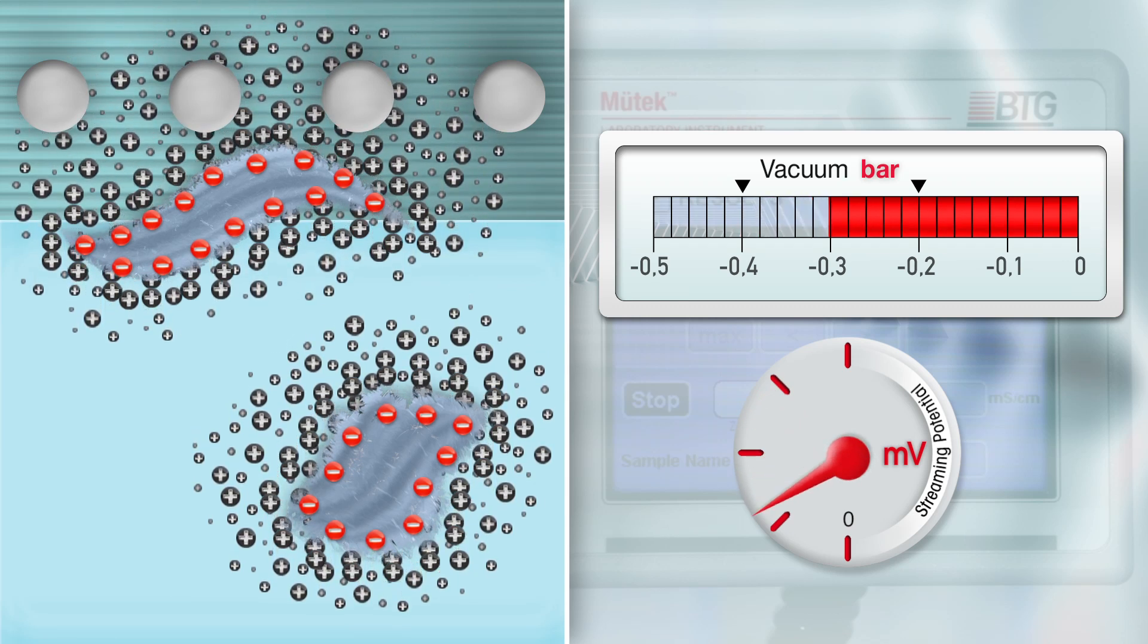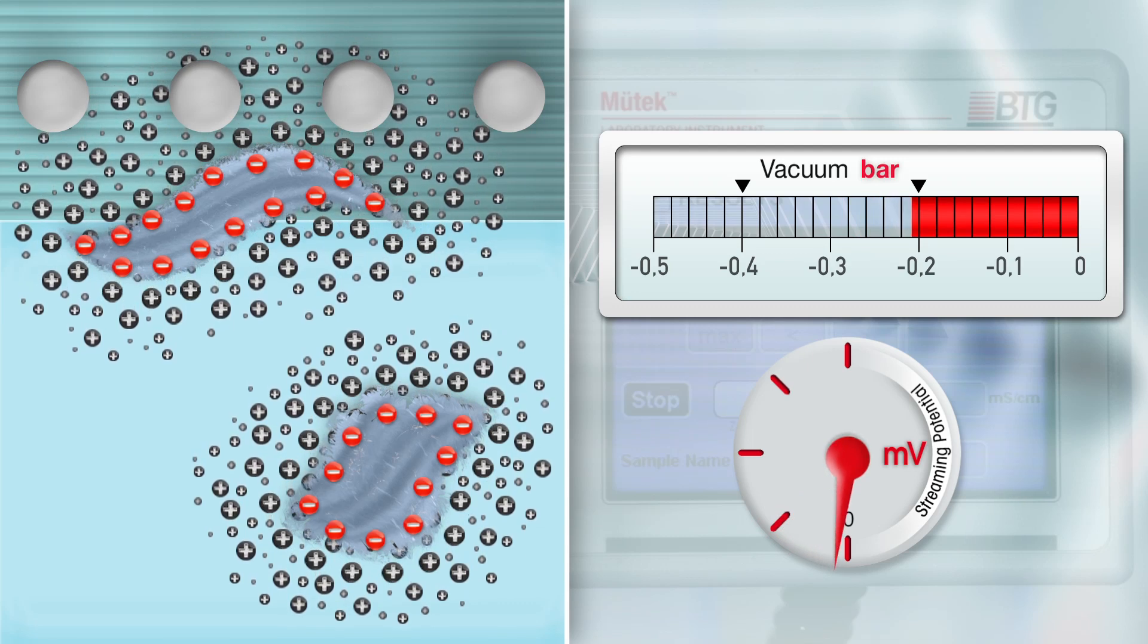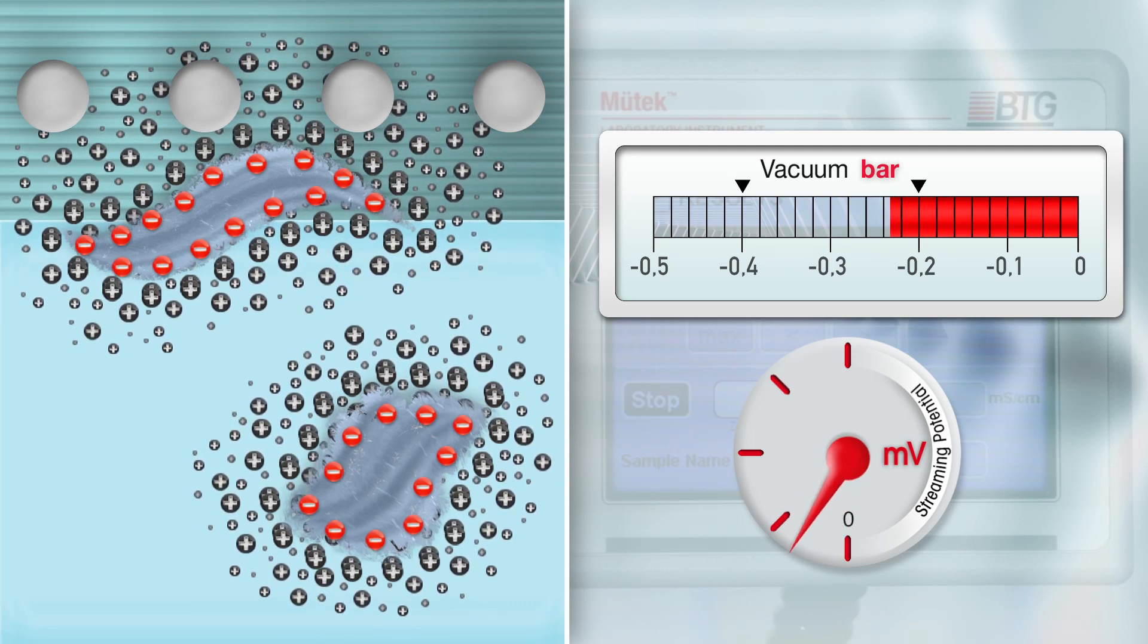This up and down of the vacuum is repeated, and the streaming potential recorded for each of these vacuum cycles.